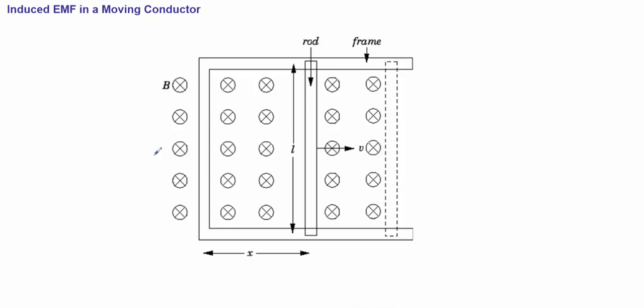All right, so since a changing magnetic flux will induce an EMF in a loop or solenoid or any sort of enclosed circuit, we've got this fancy idea called induced EMF in a moving conductor.